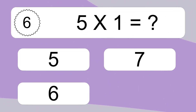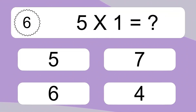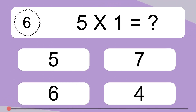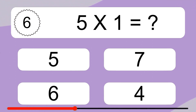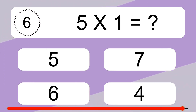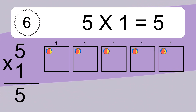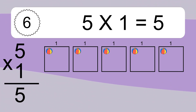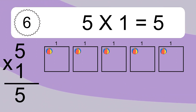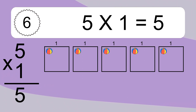5 times 1 equals what? 5 times 1 equals 5. Each box has 1 colorful ball inside. If you count all the balls in all the boxes together, you will have 5 x 1 balls. This equals 5 balls.